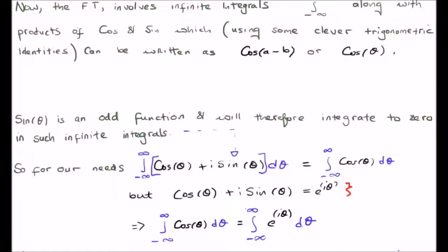So, when I say theta here, by the way, I really mean cosine a minus b, which came from having cos a and cos b and sine a sine b. Of course, once again, we will see that later on when we try and derive the Fourier transform proper.